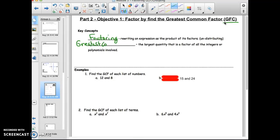And the next one, the largest quantity that is indeed a factor of all the integers or polynomials involved is what we just talked about, the greatest common factor, or what I'm going to say, GCF.